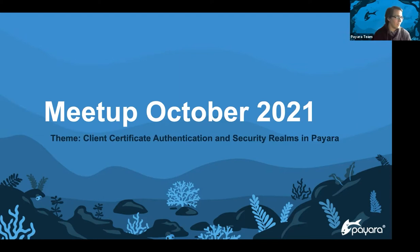Thank you for joining us. It's the October release overview, and we're going to be talking about client certificate authentication and security ramps. As normal, we'll be doing a release overview, and also talking about some other issues like path traversal security vulnerability, client certificate validation checks, configuring the HTTP ZIP compression, JDK 17, some future plans as well. And then as normal, plenty of time for questions and discussion afterwards.